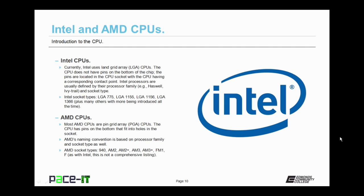Intel processors are usually defined by their processor family, like Haswell or Ivy Trail, and their socket type. Some Intel socket types are the LGA 775, the LGA 1155, the LGA 1156, and the LGA 1366. There are many more Intel socket types, and more are being introduced all the time.